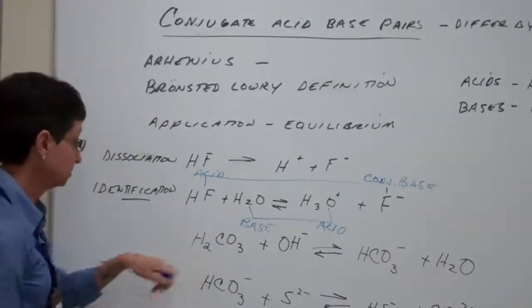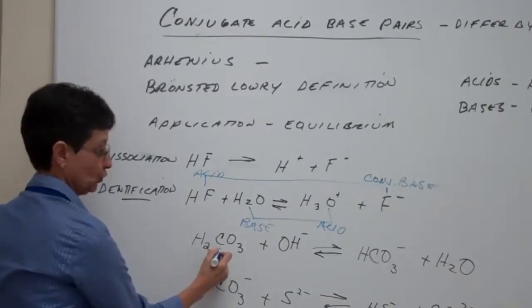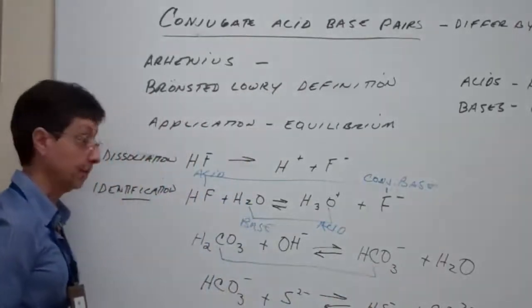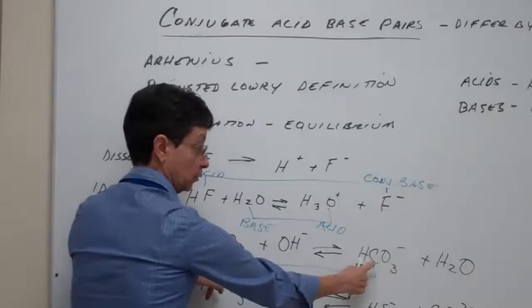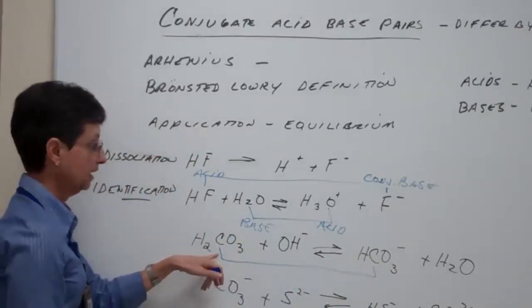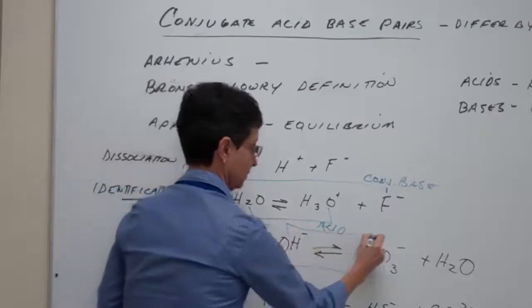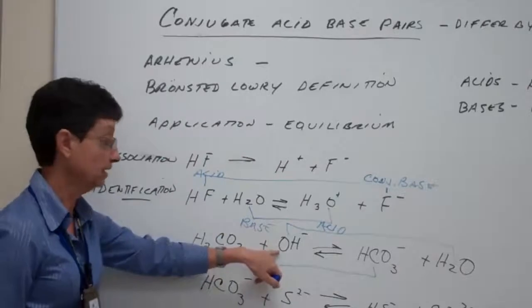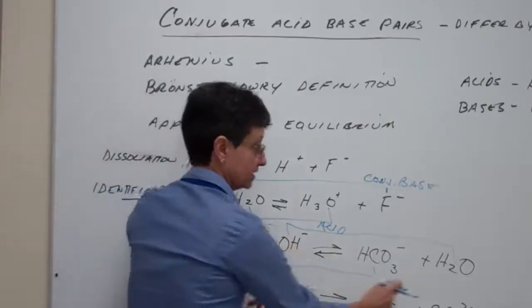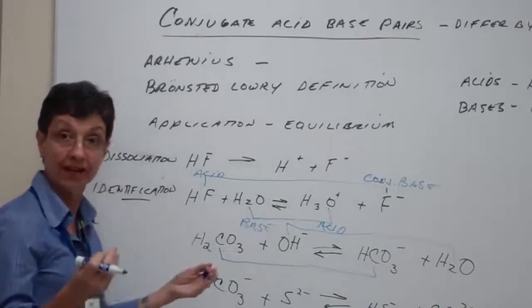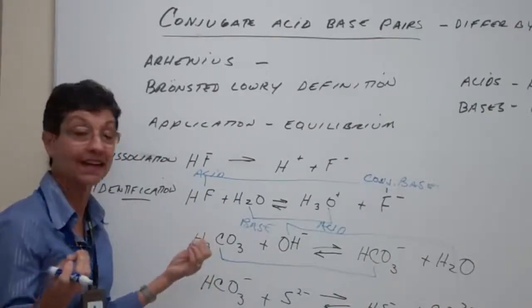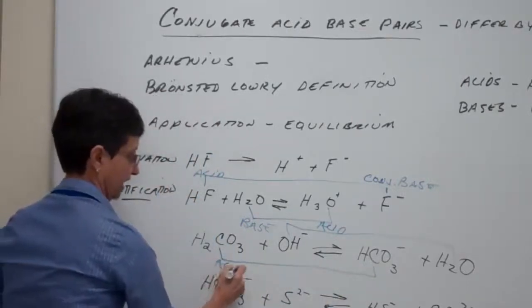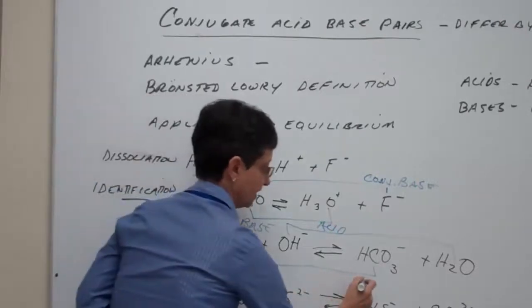Now, let's look at this reaction over here. We have H2CO3, and that's our pair there, because it only differs by one proton. One less proton, one less H+. And, then we have these two differ by one proton as well. H minus, I'm sorry, OH minus to H2O. Think of HOH. It's missing one proton, one H+. Alright, so, now these two would be, this is the acid, and this would be its conjugate base.